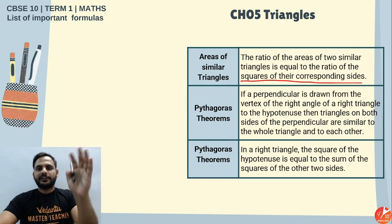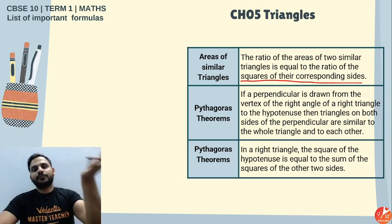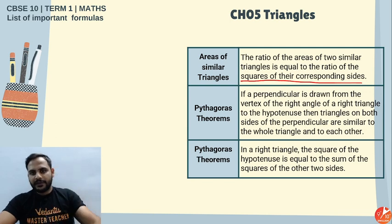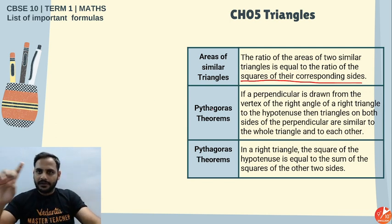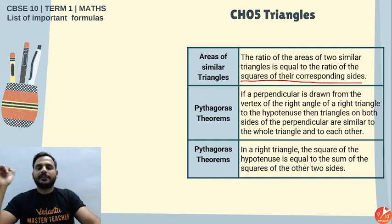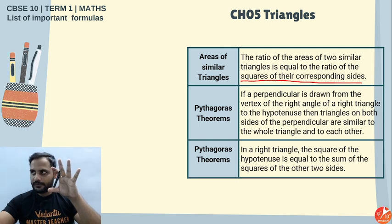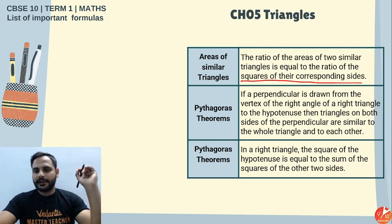The area of similar triangles: the ratio of their areas equals the square of the ratio of their corresponding sides. For example, if sides are in ratio 2:3, areas are in ratio 4:9. Pythagoras theorem: in a right-angled triangle, hypotenuse² = perpendicular² + base². Converse: if a triangle satisfies this relation, it is a right-angled triangle.